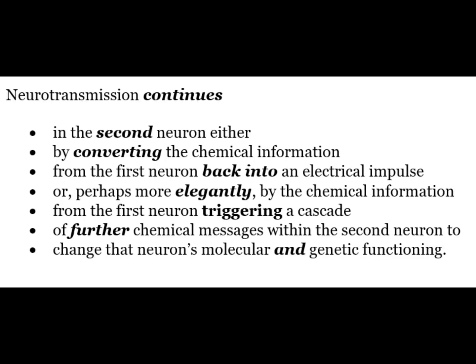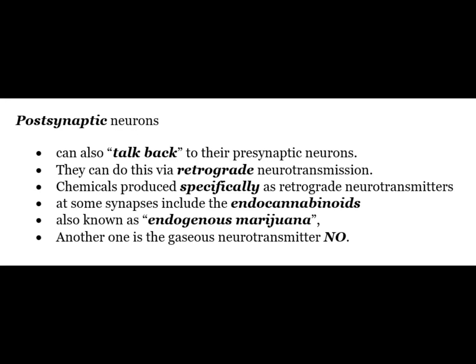Neurotransmission continues in the second neuron either by converting the chemical information from the first neuron back into an electrical impulse, or perhaps more elegantly by the chemical information triggering a cascade of further chemical changes within the second neuron to change the neuron's molecular and genetic functioning. Postsynaptic neurons can also talk back to their presynaptic neurons via retrograde neurotransmission.